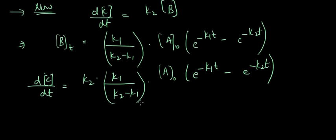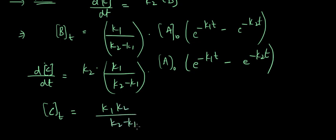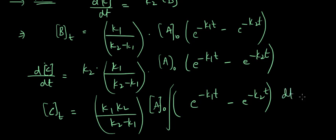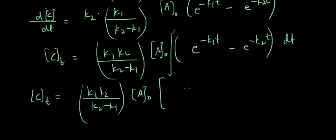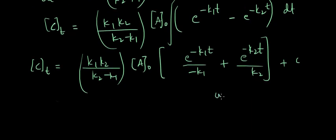Taking dt to the right-hand side and integrating, C(t) equals k1·k2 divided by (k2 minus k1) times A0, times the integral of (e to the power minus k1·t minus e to the power minus k2·t) dt. After integration: C(t) equals k1·k2/(k2 minus k1) times A0 times [e to the power minus k1·t divided by (minus k1) plus e to the power minus k2·t divided by (minus k2)] plus constant C.